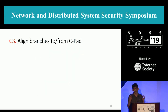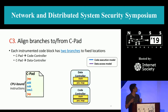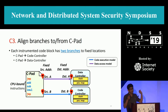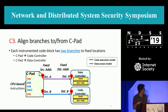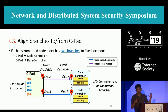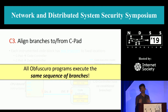To solve C3 — branch prediction issues — we align all branches to and from the CPAD. Each instrumented code block has two branches to fixed locations: from the CPAD to the code controller, and to the data controller. There's a jump at the start going to the data controller to fetch data, and another jump from the CPAD to the code controller to fetch the next code block. The code and data controllers have no conditional branches because of the side-channel-resistant implementation. So all Obscuro programs execute the same sequence of branches, irrespective of whatever program was passed through the compiler.